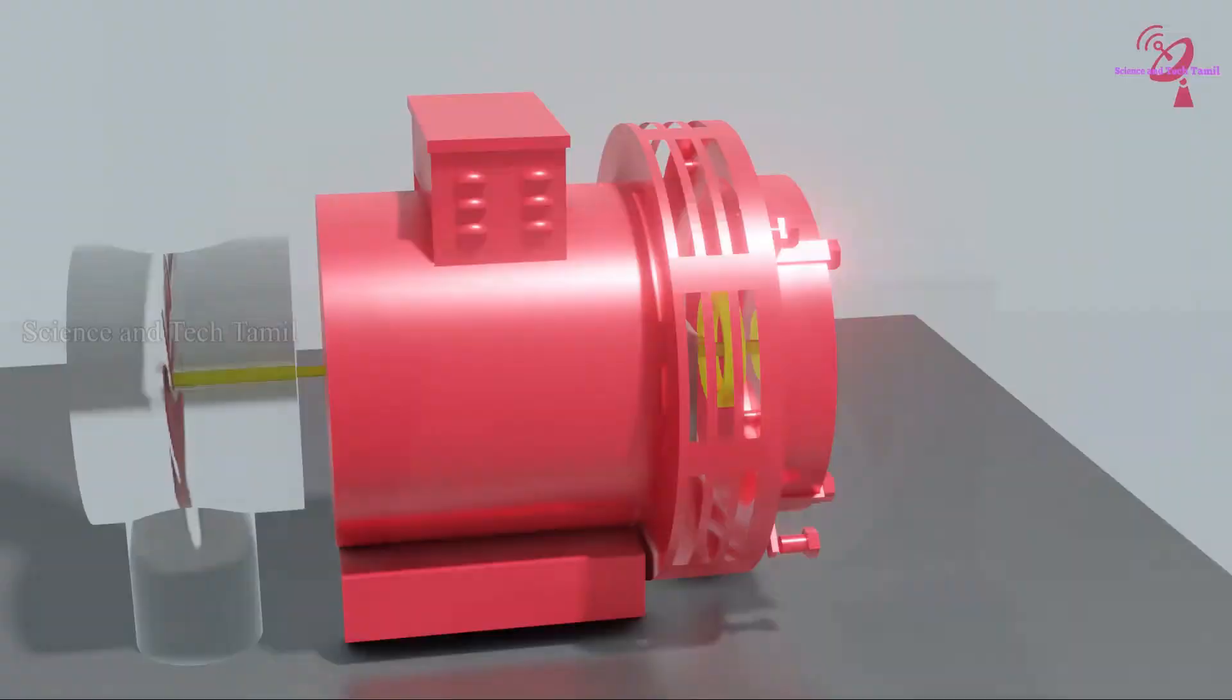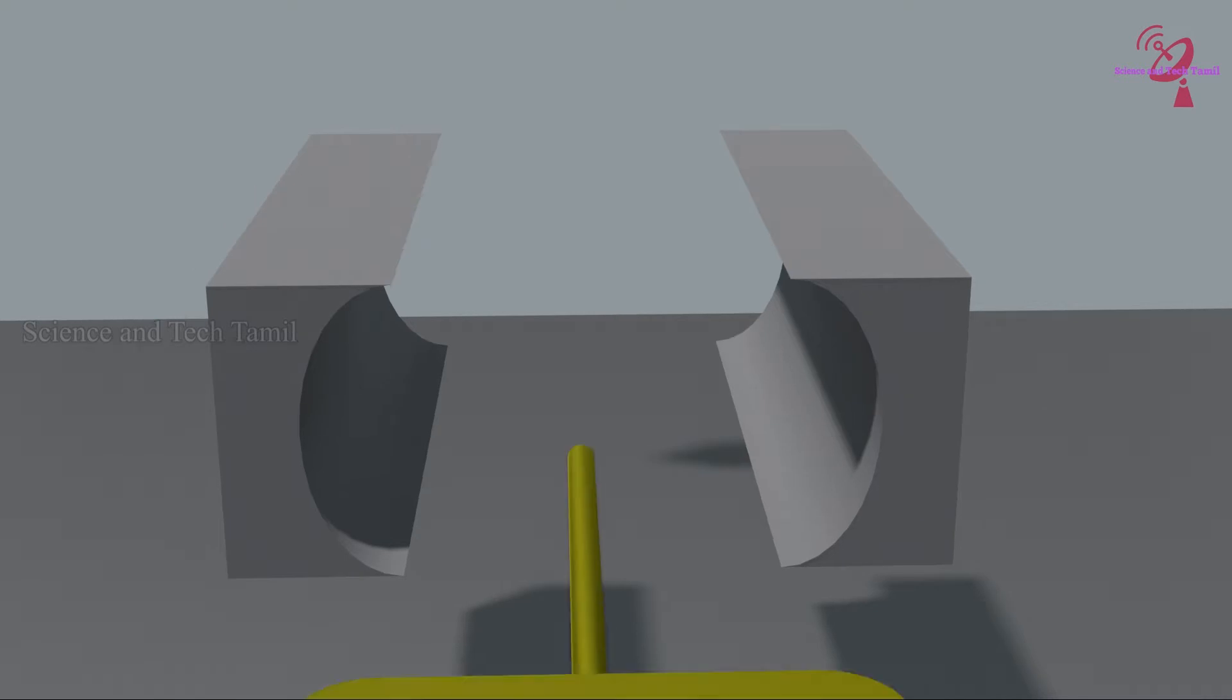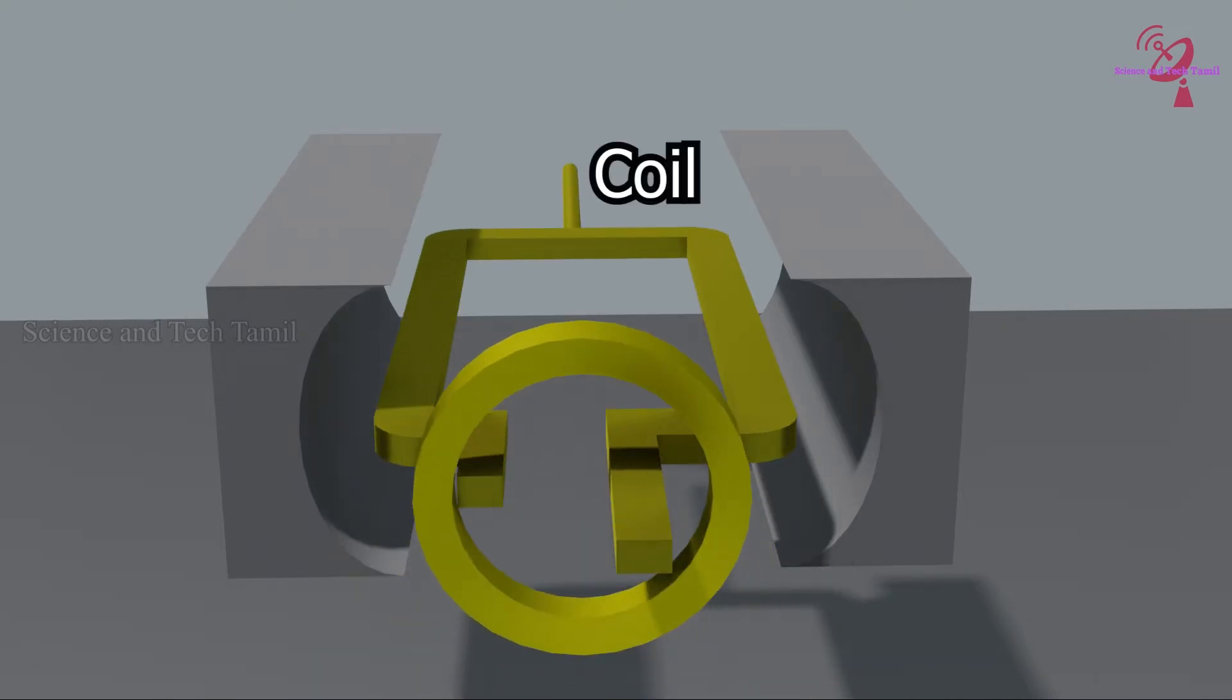In the AC generator, there are two types of magnets: south and north. The rotating coil is kept between these two magnets. The inner and outer rings are connected at both ends of the coil.